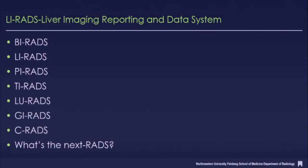LIRADS, as many of you are likely familiar with, stands for Liver Imaging Reporting and Data System. It's one of the newer iterations of systems initially started by BIRADS, which has been enormously successful in standardizing descriptions, reporting, and tying it to managed findings. Thanks to the success of BIRADS, we now have LIRADS, PIRADS, TIRADS, LUNGRADS, GIRADS, CRADS — which then begs the question, what's going to be the next RADS?